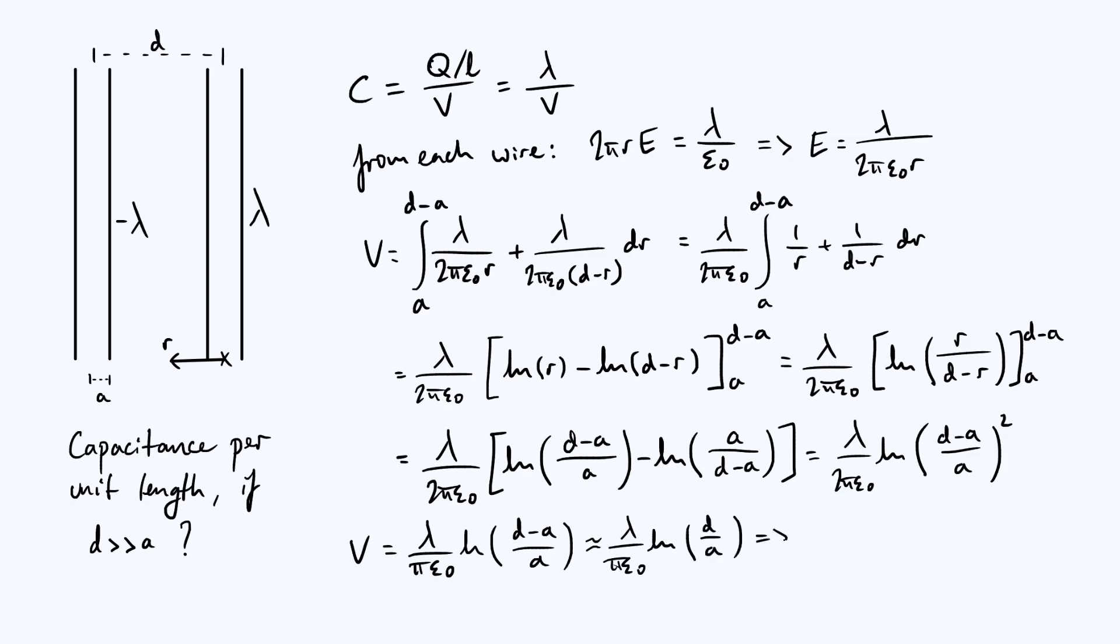Then we just go back to our definition of capacitance. We have to do lambda over that entire thing, so lambda over all of that. Of course, when we divide, the lambdas will cancel and then we just flip the rest of it upside down because we're dividing. So your capacitance is going to be roughly pi epsilon 0 divided by natural log of d over a, and we have succeeded in deriving our approximate expression.